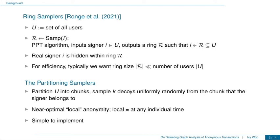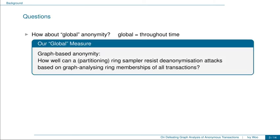Given this background, we are therefore interested in further investigating the partitioning samplers. Specifically, we ask: what if we consider the global anonymity of ring samplers, where by global we mean the anonymity throughout time? For this, we define the graph-based anonymity of ring samplers — that is, how well can a ring sampler resist de-anonymization attacks that are based on graph-analyzing the ring memberships of all transactions in the history?